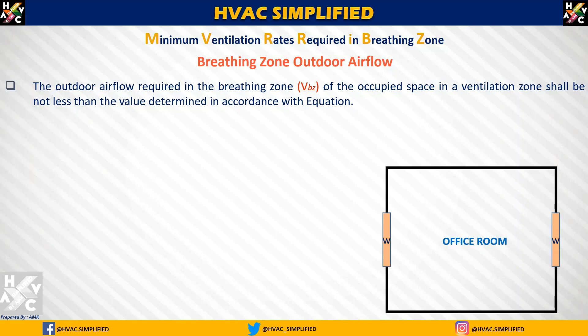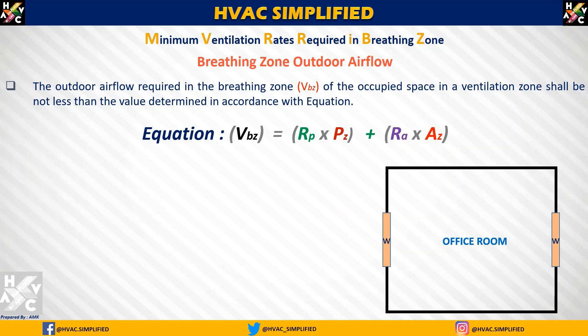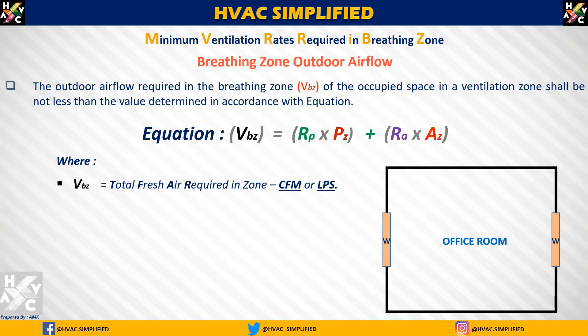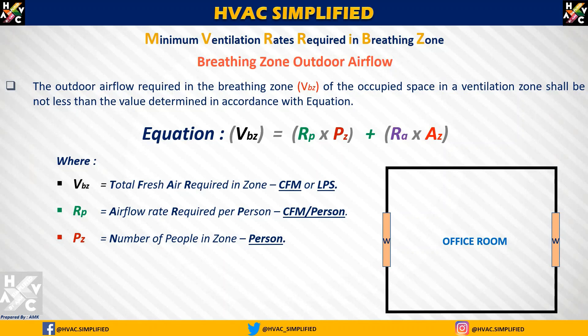यहाँ पर मैंने एक office room का example लिया हुआ है इस equation को derive करने के लिए। VBZ is equal to total fresh air required in the zone, जो कि हम CFM और liters per second में determine करते हैं। VBZ is nothing but आपका minimum CFM requirement for fresh air ventilation। RP is equal to air flow rate required per person, यानि CFM per person, आशरे 62.1 के table के अनुसार। PZ is equal to number of people in a zone — एक zone में कितने persons होते हैं वो PZ की value होती है।